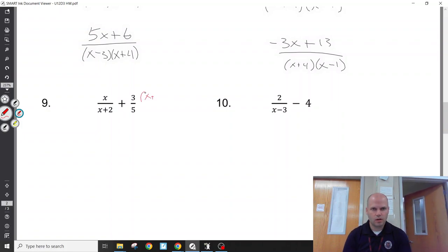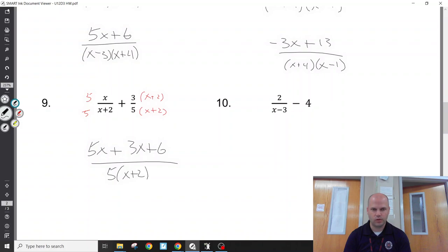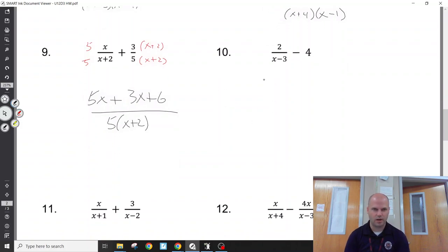Same thing here, but the common denominator would have to be 5 times x plus 2. So I get 5x and I have 3x plus 6. I have 5 times x plus 2. We don't like to distribute in the denominator, we just like it to be common, so that's good. This is 8x plus 6 over 5, x plus 2.